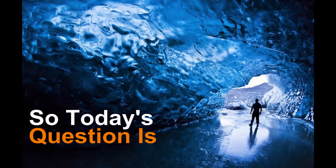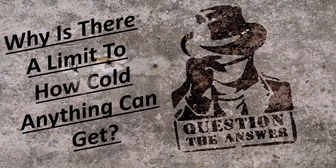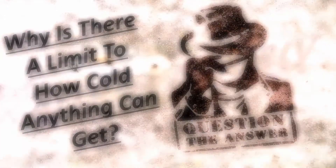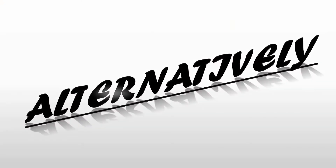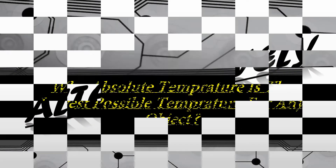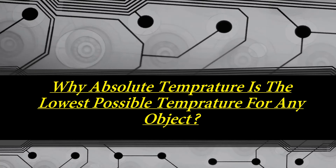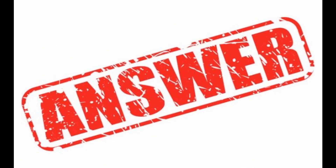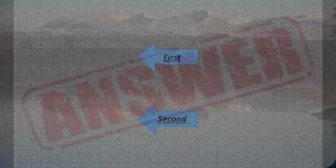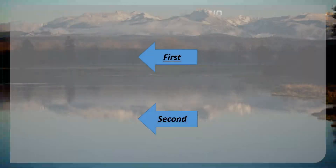Today's question is: why is there a limit to how cold anything can get? Alternatively, why is absolute zero the lowest possible temperature for any object?